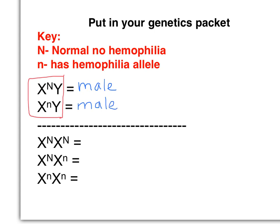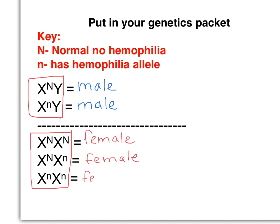Looking down at the remaining entries, with two X chromosomes, those will be female — the next one will be female, and the last one will be female. X and Y is a male; XX is female. Make sure you write that down and remember it. When you write your Punnett square, you need to write the X and the Y, or you're going to get really messed up.